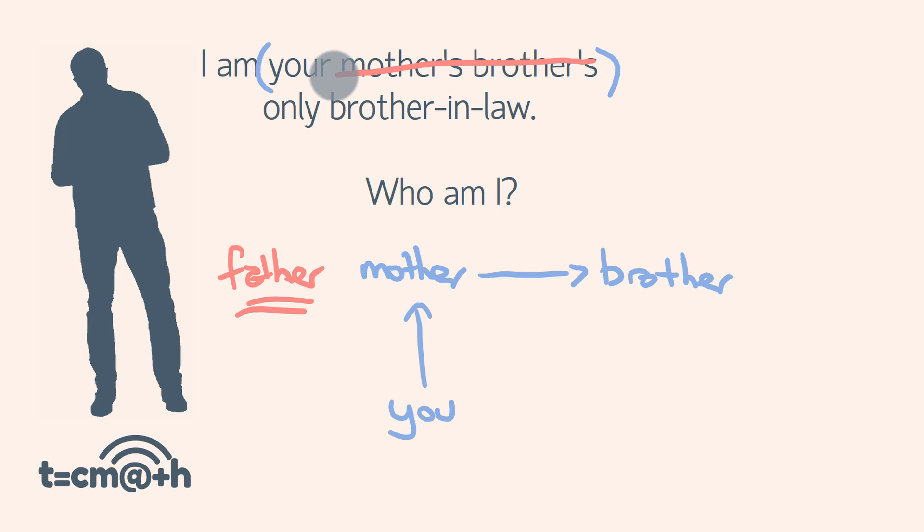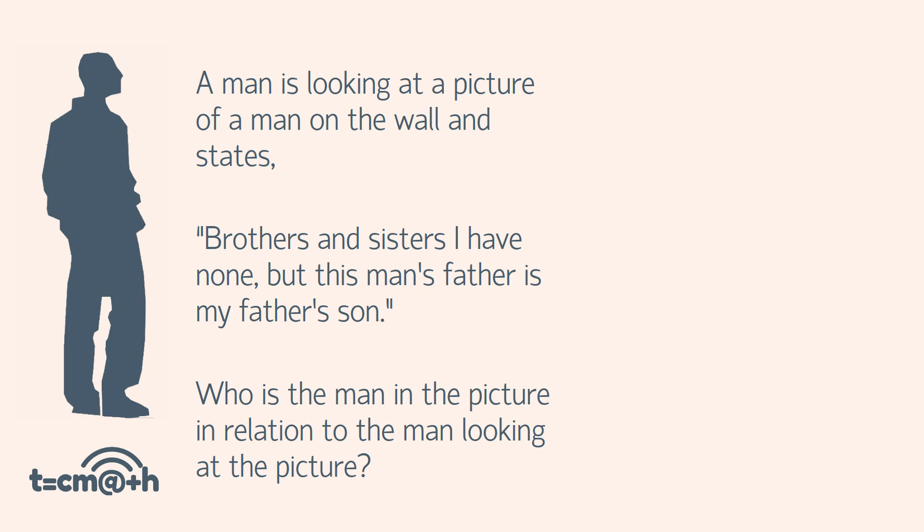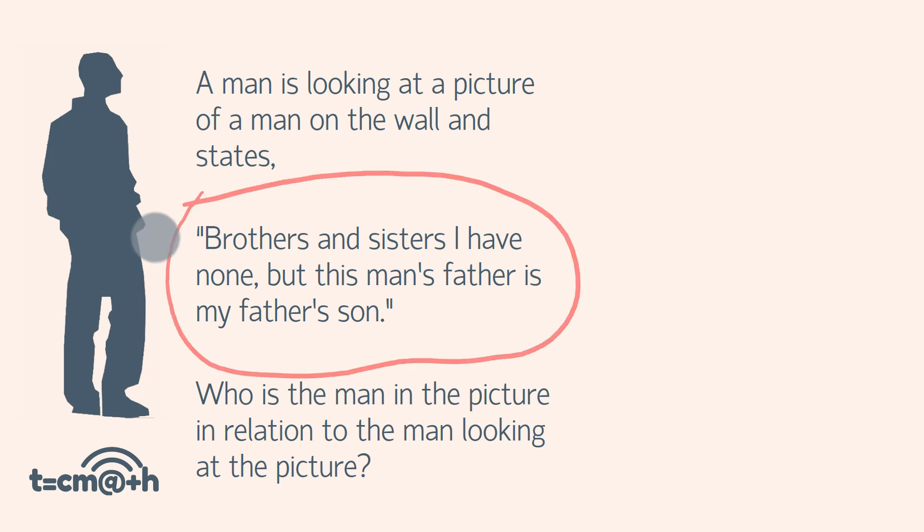What about we have a look at another one of these? Riddle number two — and this one I remember as a kid, I used to find it pretty hard, it used to confuse me a fair bit. A man is looking at a picture of a man on the wall and states: brothers and sisters, I have none, but this man's father is my father's son. Who is the man in the picture in relation to the man looking at the picture? Pause this video if you'd like to give this problem a chance, and when you're ready to see how to solve it, come back again.